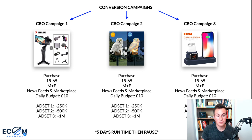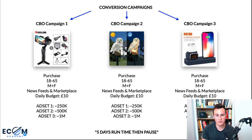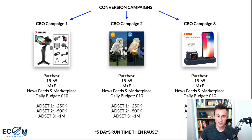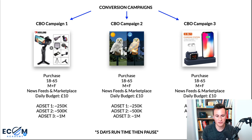So by going a bit higher at 10 pounds, you increase your chances of getting the best selection of your audience. In each CBO campaign there are going to be three ad sets. All three ad sets are the same up to this point — purchase objective, 18 to 65 plus, male and female, News Feed and Marketplace — and then this is where they start to differentiate. Ad set number one is going to have an audience size of around 250k. Ad set number two around 500k. And ad set number three, one million.